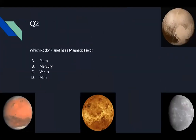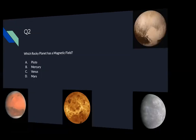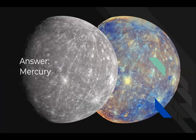Question two: which of these four rocky planets has a magnetic field — Pluto, Mercury, Venus, or Mars? Type your answer in a private chat. Ditya, correct. Nishka, correct. Barnika, you are wrong. Arnav, wrong. Naveen, wrong. The answer is Mercury. Remember, Venus and Mars do not possess a magnetic field — Mercury and Earth do.